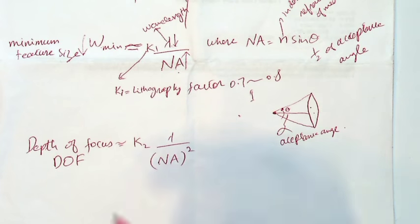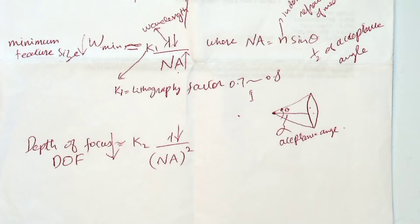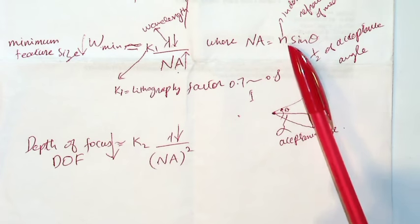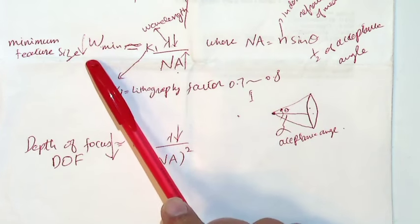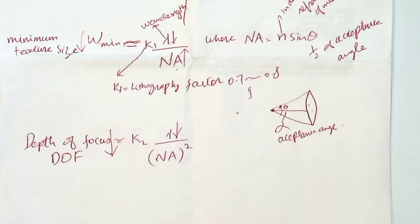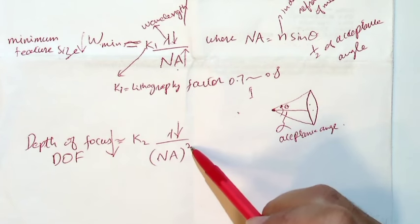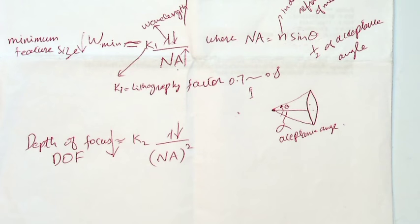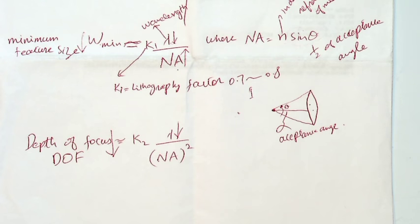If you double the numerical aperture, the minimum feature size reduces by two times — good. But the depth of focus decreases by four times — bad. If previously you could focus a one-millimeter-by-one-millimeter area, now you can only focus one quarter of that. The rest will not be in focus, causing non-uniform exposure. So there are real problems that come into play when you start using smaller wavelengths or larger numerical apertures.